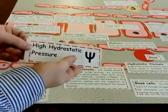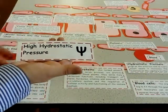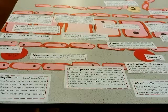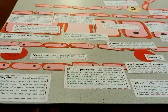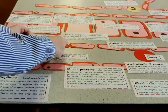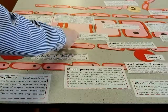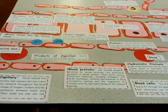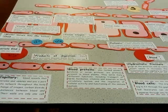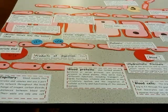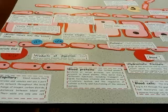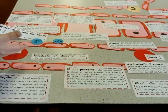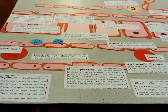The hydrostatic pressure at the arterial end is high. This causes water to move from the blood into the tissue fluid, because in the tissue fluid, at the arterial end, the osmotic pressure is a lot lower. So water moves into the tissue fluid.